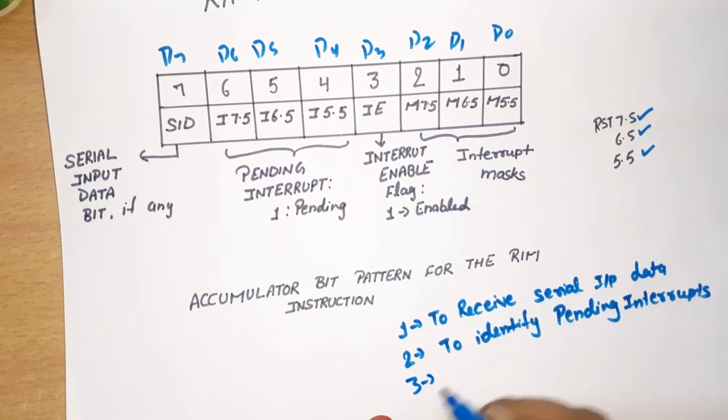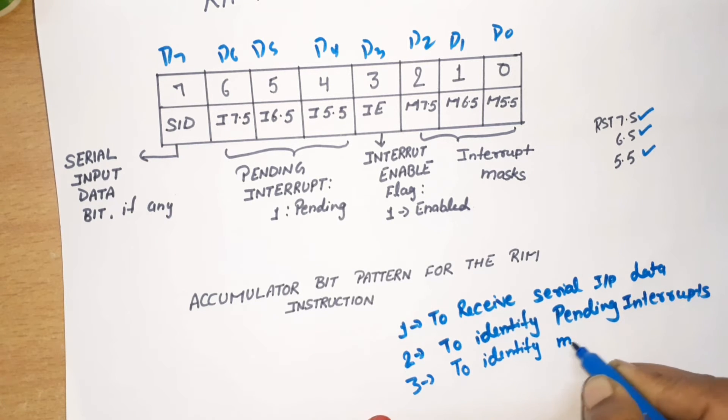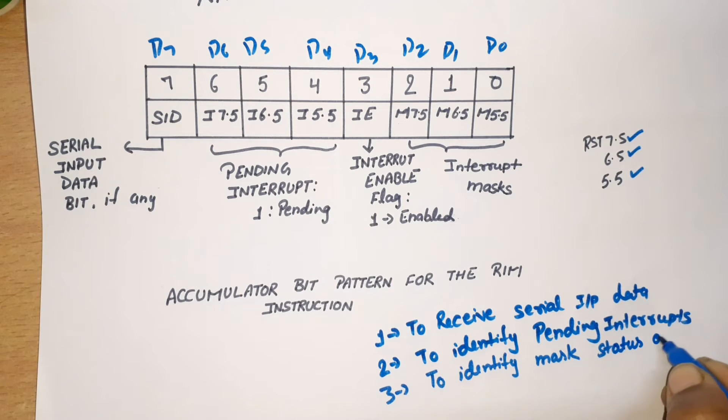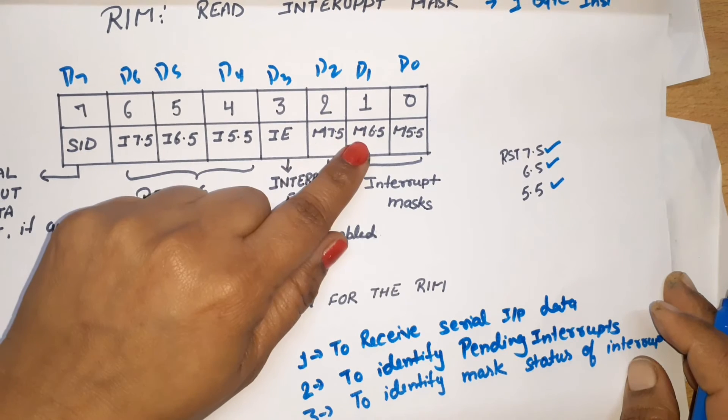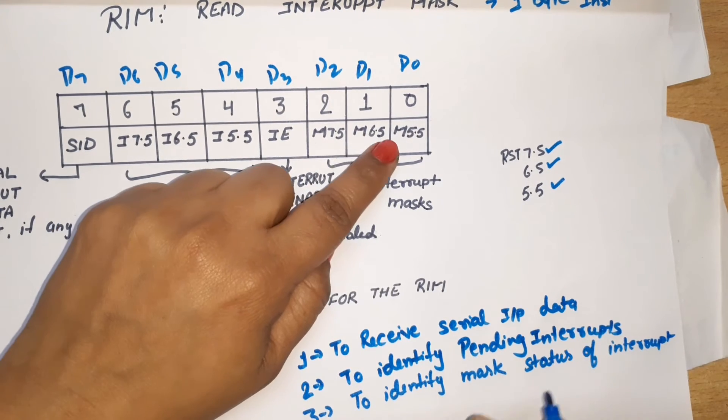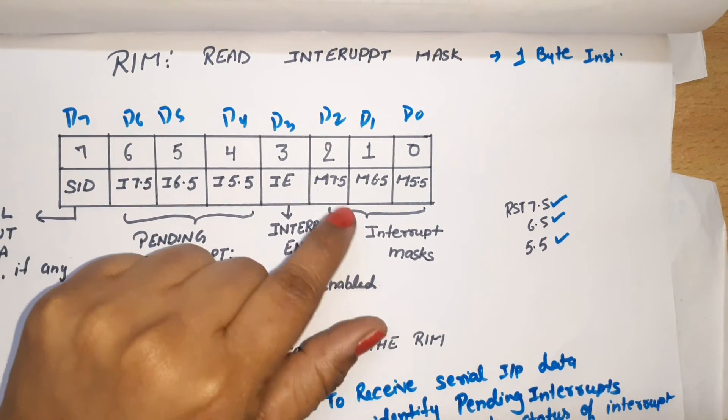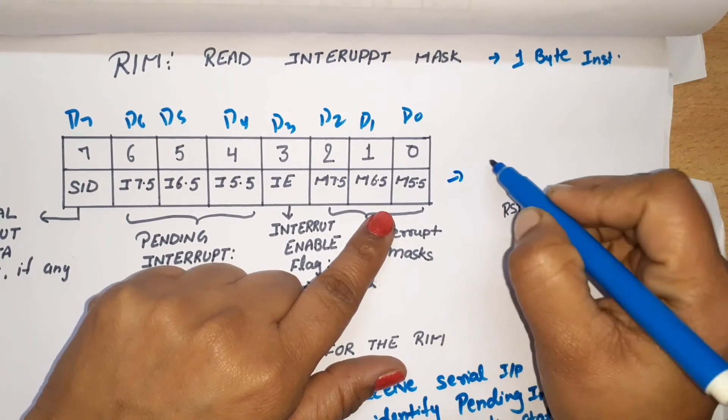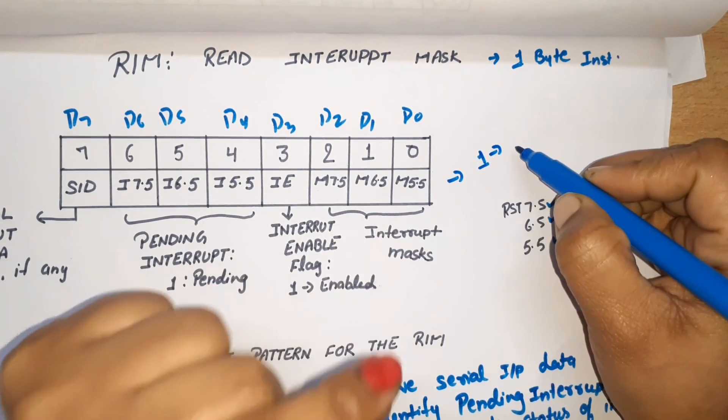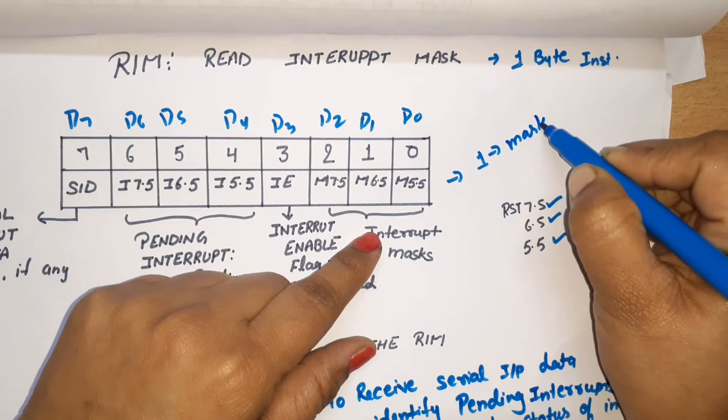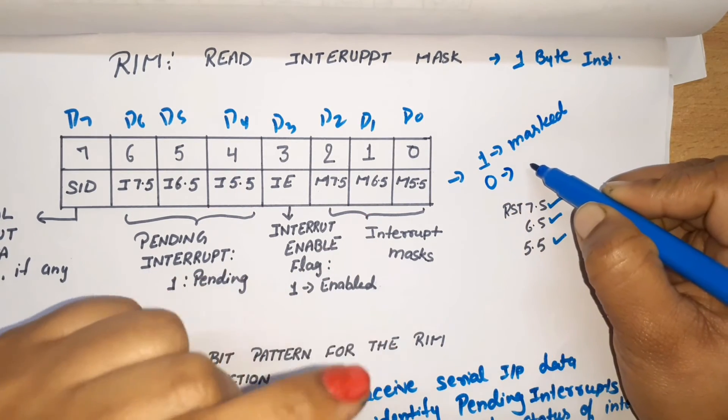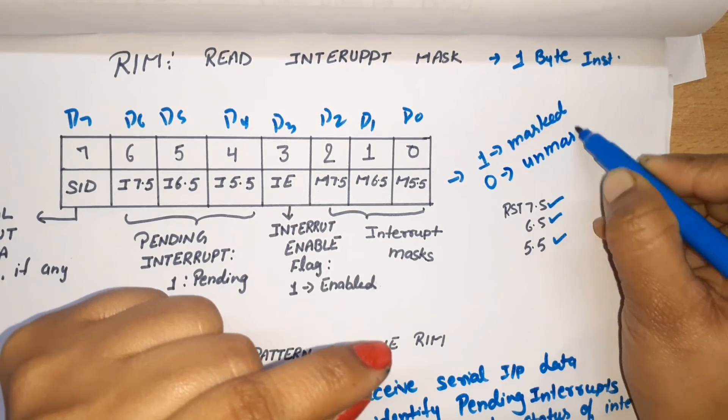The third function is to identify mask status of interrupts. M7.5 is for RST 7.5, M6.5 for RST 6.5, and M5.5 for RST 5.5. If there is one somewhere, one shows that particular interrupt or respective interrupt is masked. If there is zero, it means that respective interrupt is unmasked.